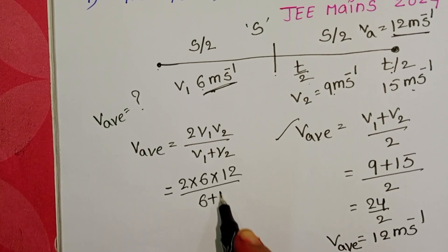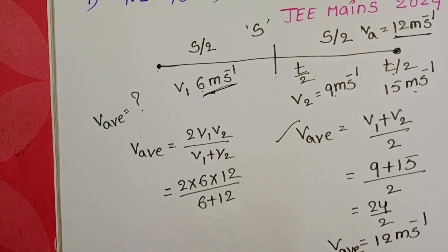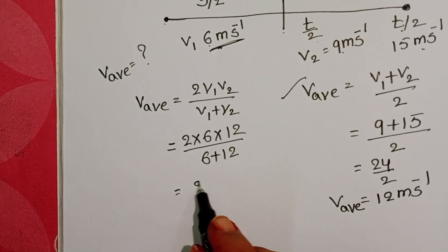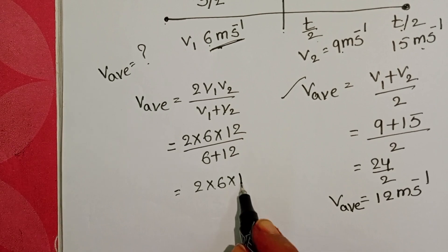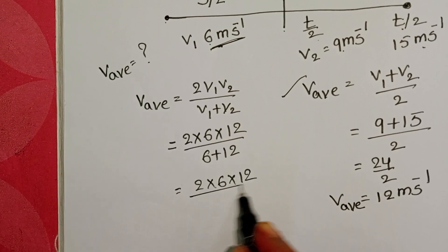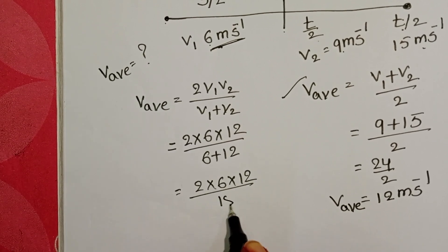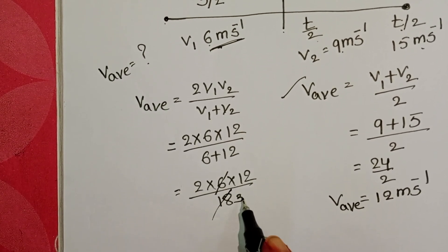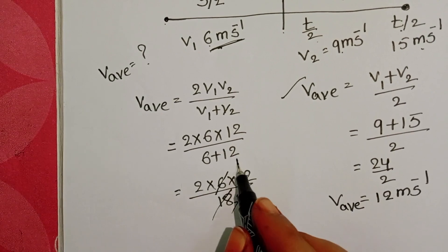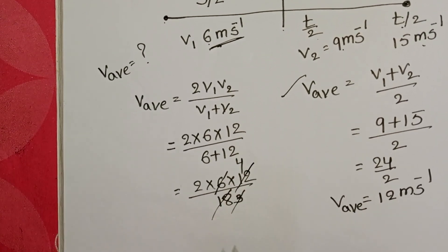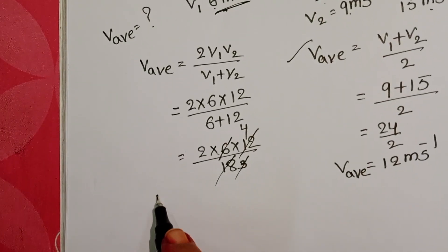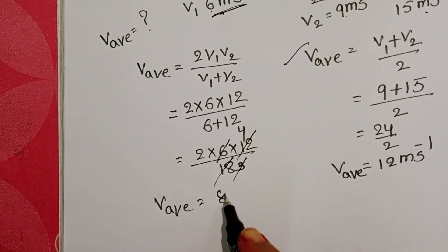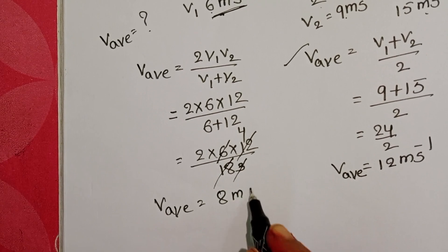Calculating: 2 × 6 × 12 / 18 = 144 / 18. Simplifying, the average speed equals 8 meters per second.